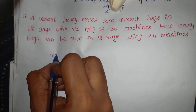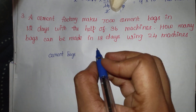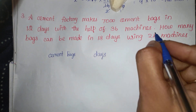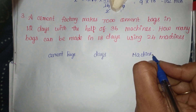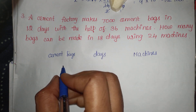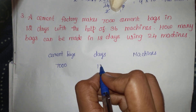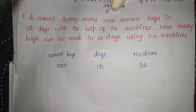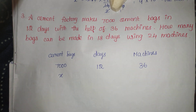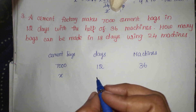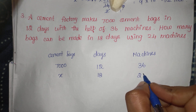Cement bags — next, it is 28 days; next, it is 36 machines. This is given. Now, cement bags come to 7000 cement bags. This is 12 days. So we will put X in — we have to make it in 18 days. How many machines? 24 machines.